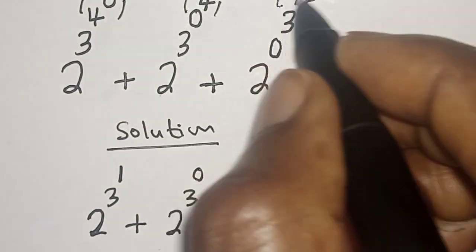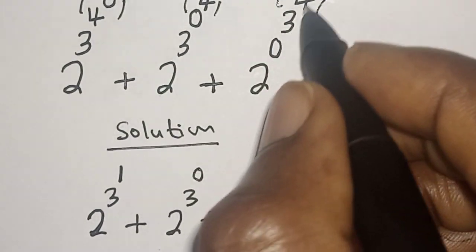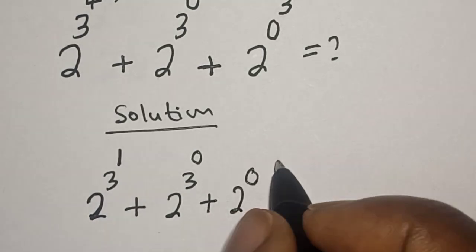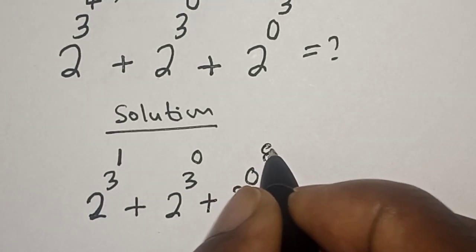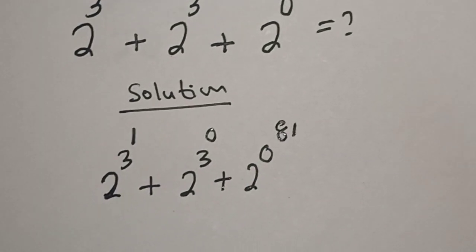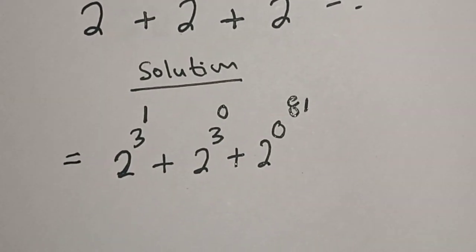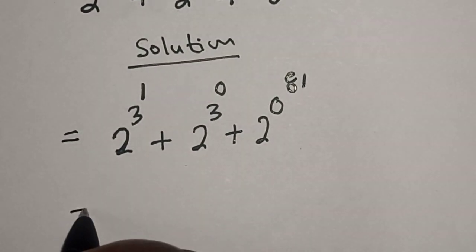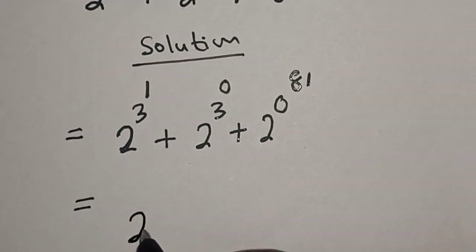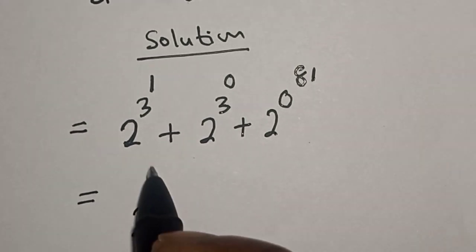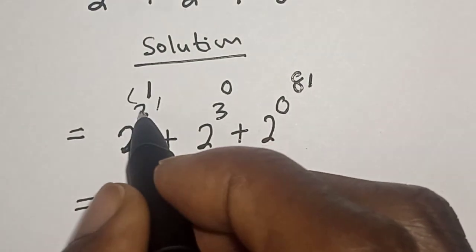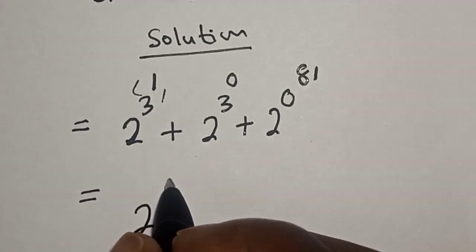Then let's work with this. 3 raised to the power of 4 is 81. This is equal to 2. Then let's work with this: 3 raised to the power of 1 is 3.